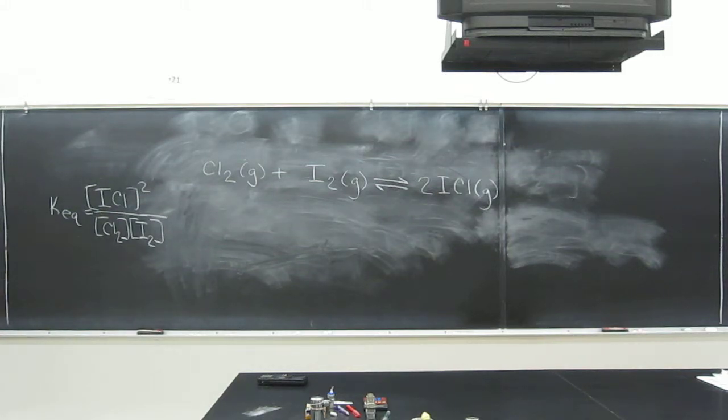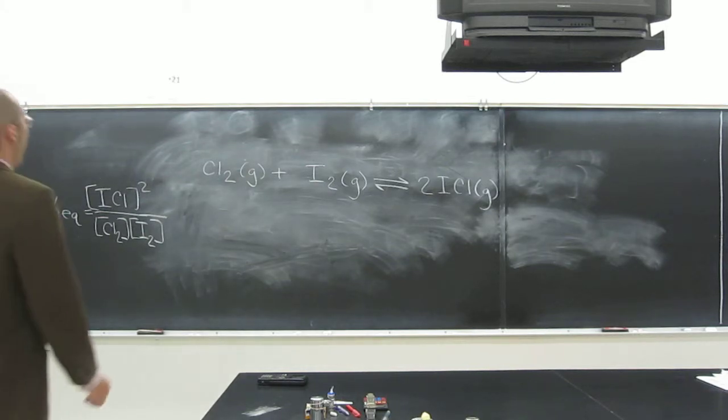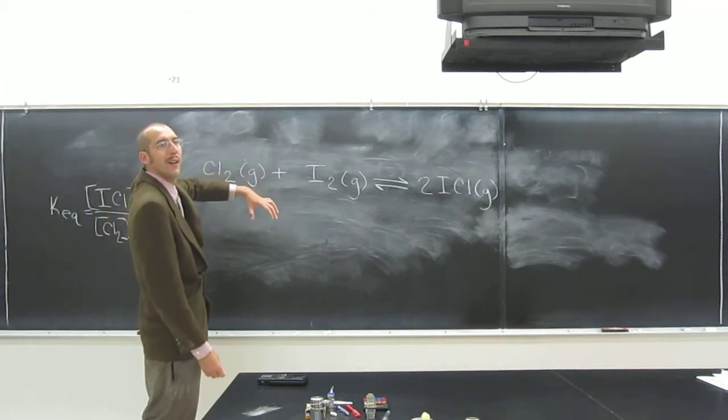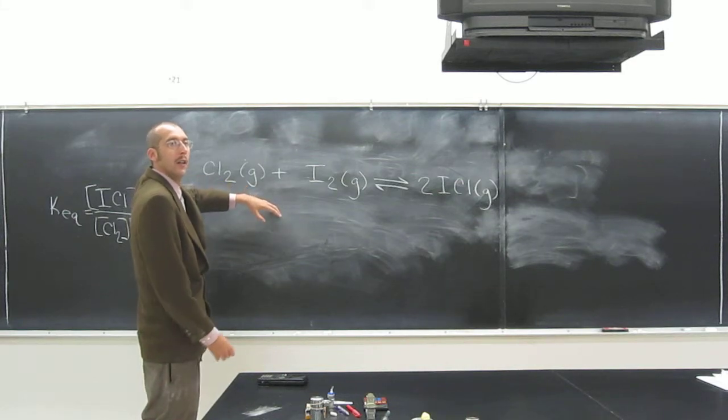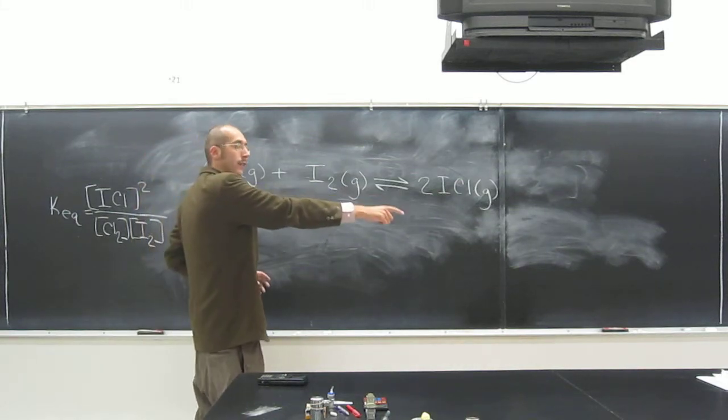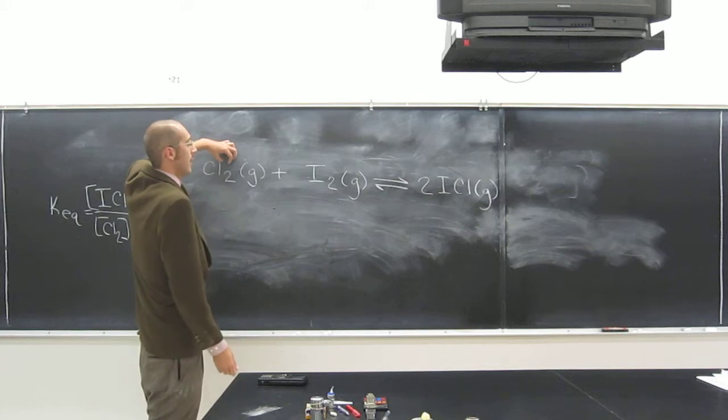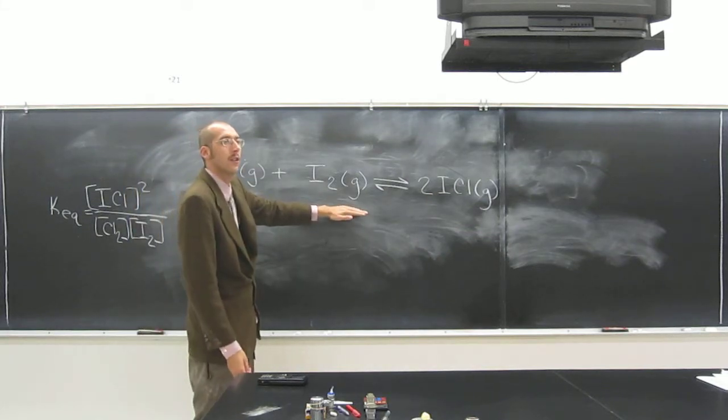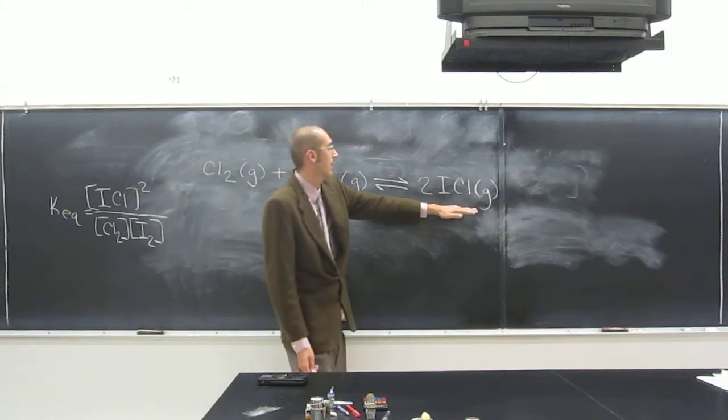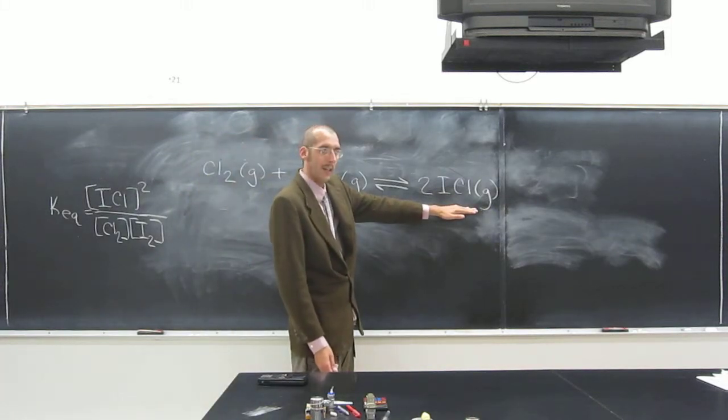So we could do our normal Le Chatelier's principle if we wanted to. If I added Cl2, what would happen to the reaction? It would go to the right. If I added Cl2, what would happen to the concentration of I2? Decrease. What would happen to the concentration of ICl? Increase, right?